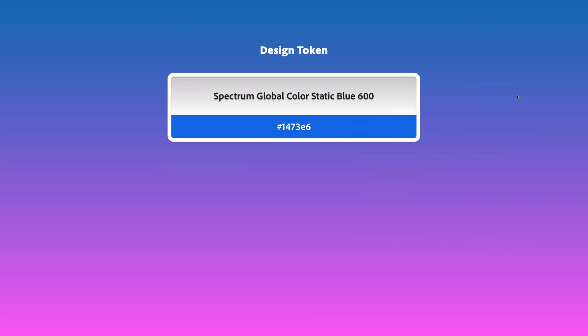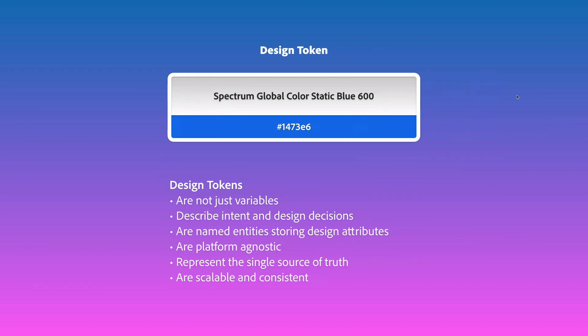So there's this concept called a design token, which technically is a key and a value that can also have a key referencing another key — what we call an alias. But tokens are a lot more than fancy variables. They describe intent and design decisions, they can store design attributes, they are platform agnostic, and because they're agnostic they can be that single source of truth — they can live in one place.